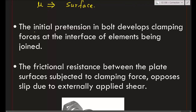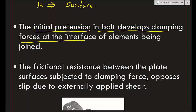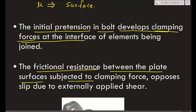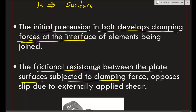The initial pretension in the bolt develops a clamping force at the interface of the elements being joined. Applying a pretensioning force due to tightening generates a clamping force — that is the normal reaction. The frictional resistance between the plate surfaces, subjected to this clamping force, opposes slip due to the externally applied shear. So the externally applied tensile or shear force is opposed by the frictional resistance developed between the two surfaces.